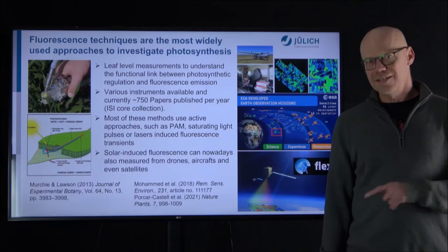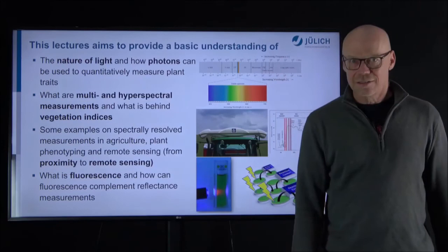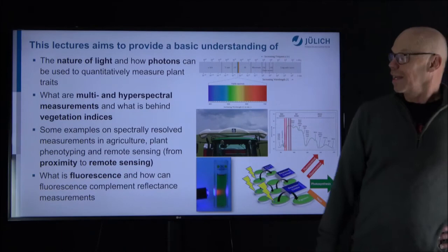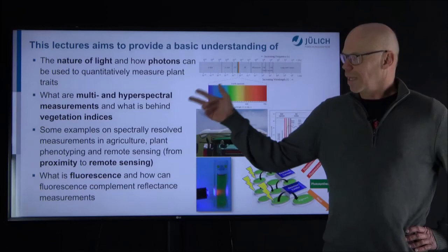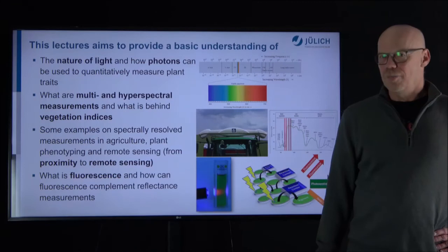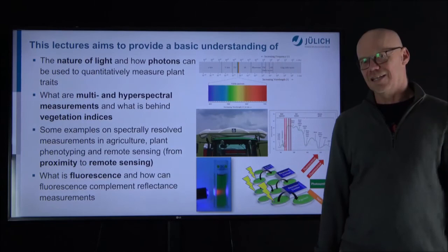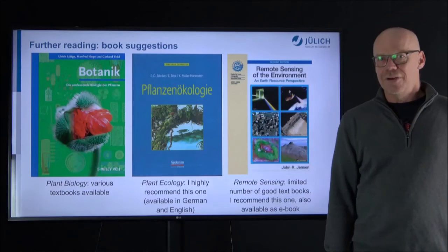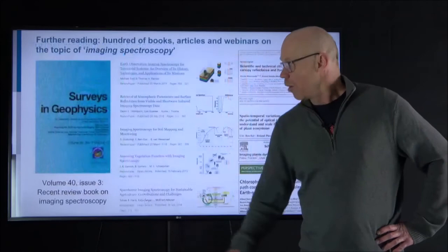To go into further detail on fluorescence would require another lecture. If you are interested, there are a few citations available. I would now like to come to the end of this overview lecture. I hope I could give you some basic understanding of the physical and biochemical properties behind measuring light using spectrally sensitive cameras and vegetation indices, how they are applied for proximity and remote sensing and for agricultural scientists, and that beyond reflectance, absorption, and transmission, there is also a fluorescent signal currently being exploited for deeper insights into plant functioning. You will find additional reading on the website, including textbooks and links to scientific overview articles.